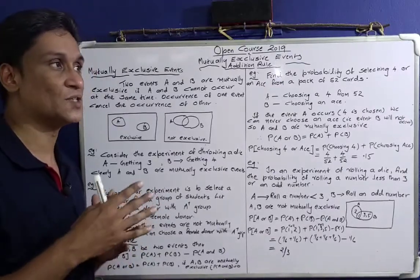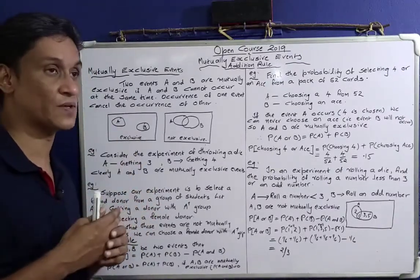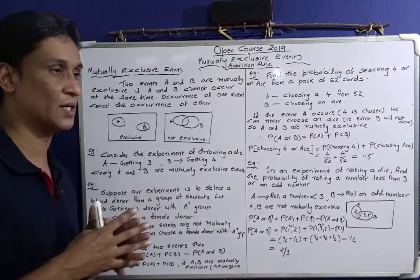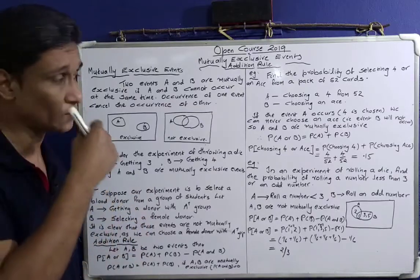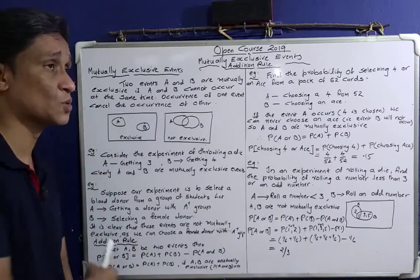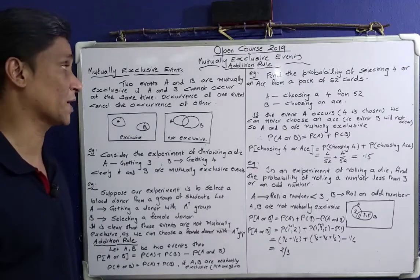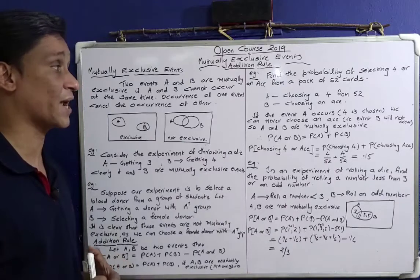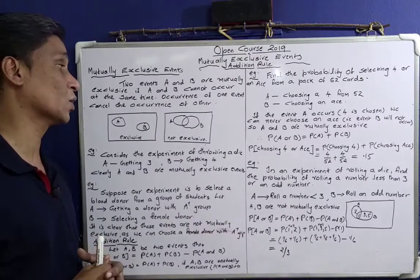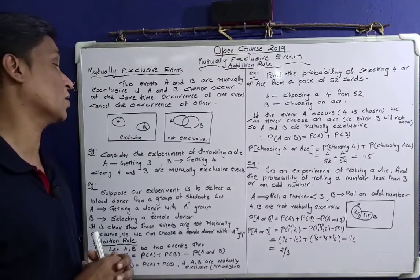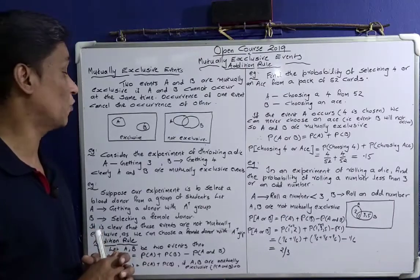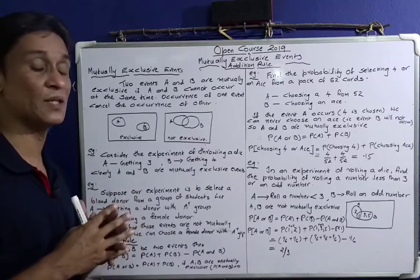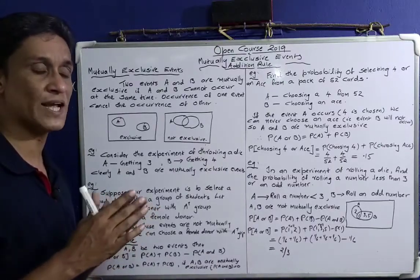If we are going to have two different concepts — Mutually Exclusive Events and Addition Rule — we call it a Mutually Exclusive Event and we call it an Addition Rule. Two events A and B are mutually exclusive if A and B cannot occur at the same time. That's why A and B are the two events.